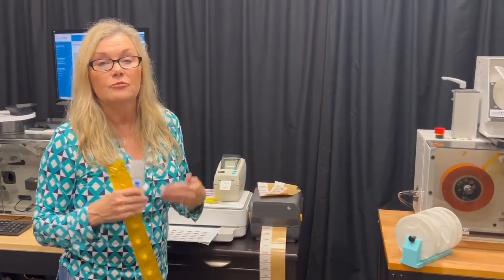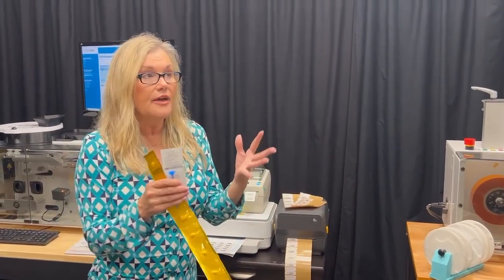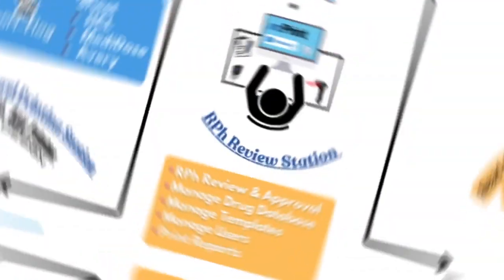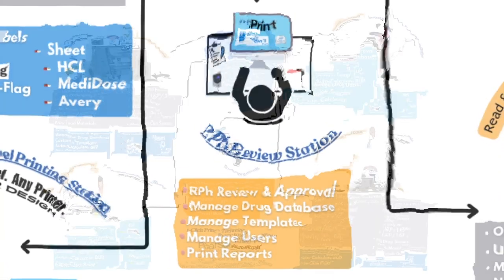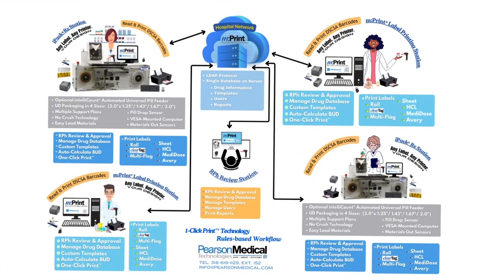You can also set up an additional station that would be a pharmacist review station — where your pharmacist would review all of the packaging that has been done and can approve that packaging. They can also edit drugs, add drugs, add users, and change user credentials. All of those things can be managed from an additional station, either a printing station or just a pharmacist approval and admin station.